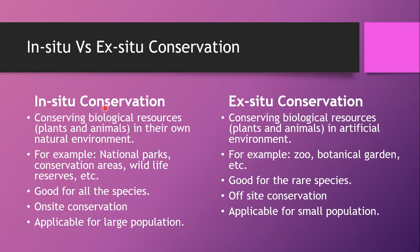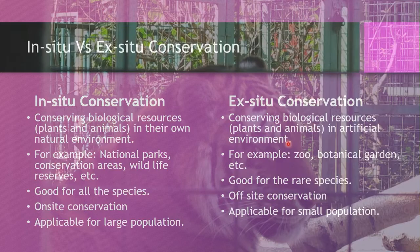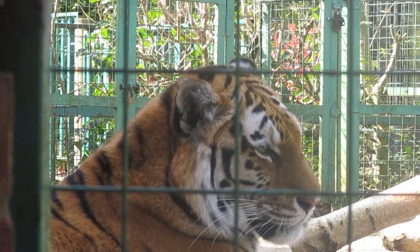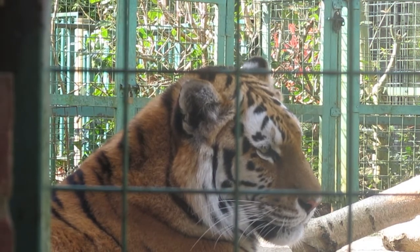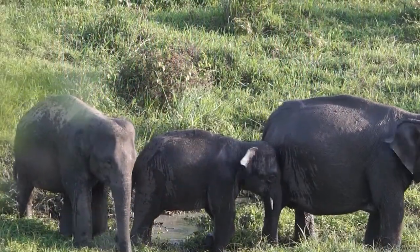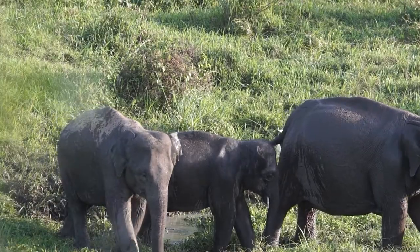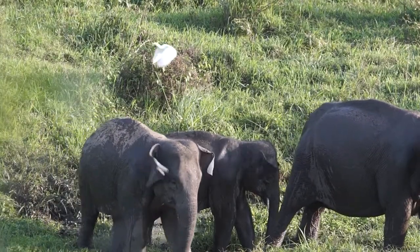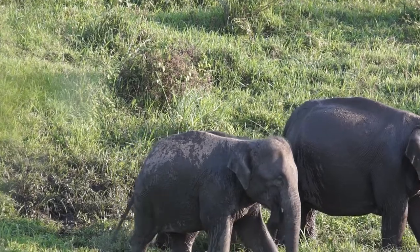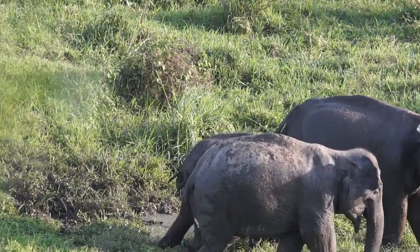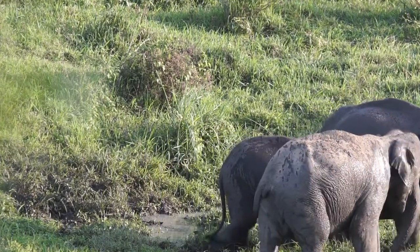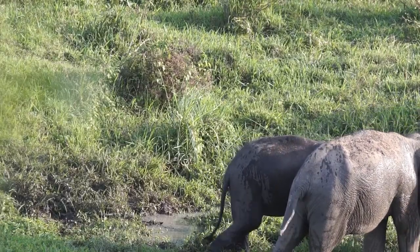If we conserve those biological resources in their original environment, that is called in situ conservation. But if we conserve those biological resources in the artificial, man-made environment, that is called ex situ conservation. For in situ conservation, the best examples are national parks, conservation areas, and wildlife reserves, where plants and animals are conserved in their natural habitat.